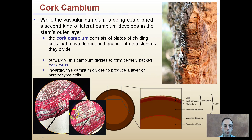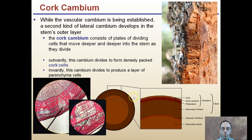The cork cambium, as pictured and zoomed in here: while the vascular cambium is being established, a second kind of lateral cambium develops in the stem's outer layer. This is the cork cambium, which consists of plates of dividing cells that move deeper into the stem as they divide. Outwardly, this cambium divides to form densely packed cork cells. Inwardly, it divides to produce a layer of parenchyma cells. In this image of a piece of wood cut in half, the cork and cork cambium are located very close to the surface, and together they make the periderm, which along with the secondary phloem makes up the bark region.